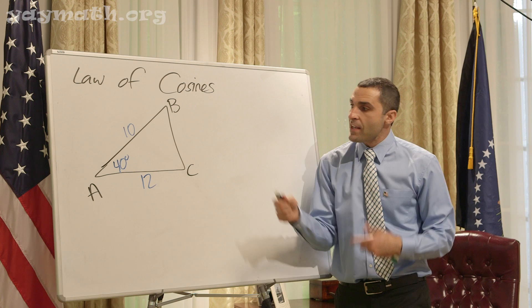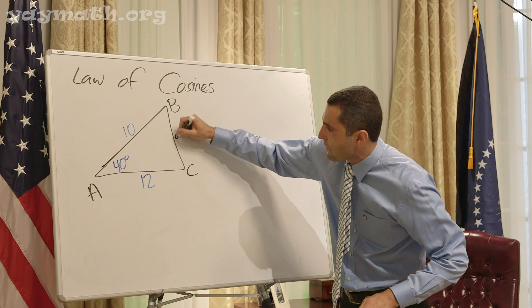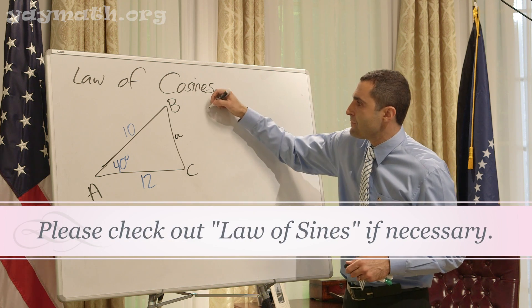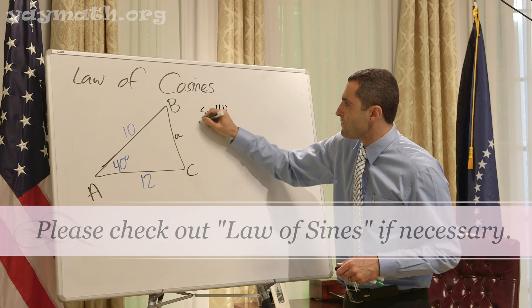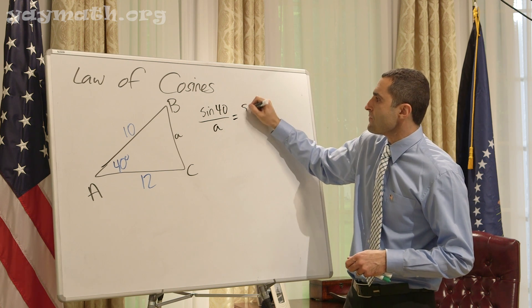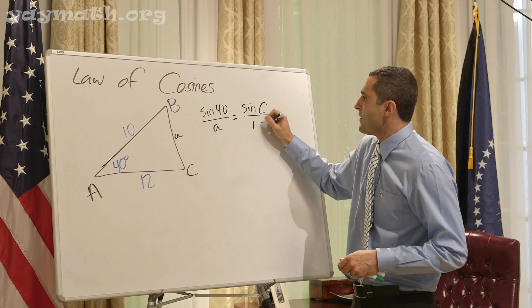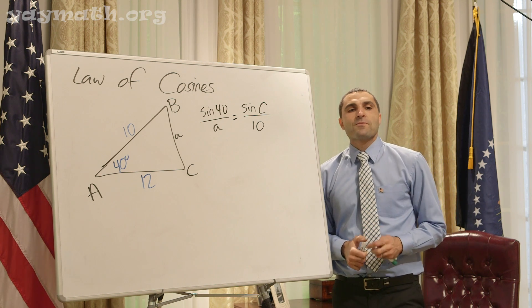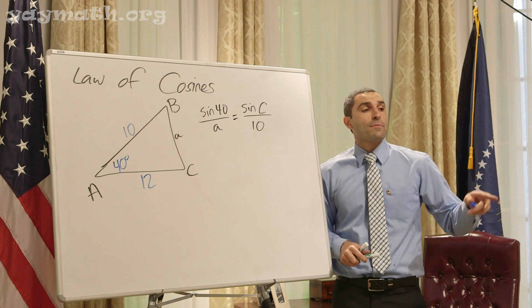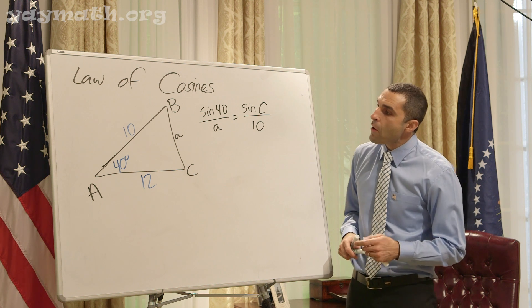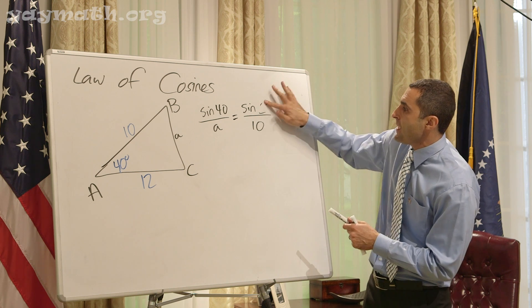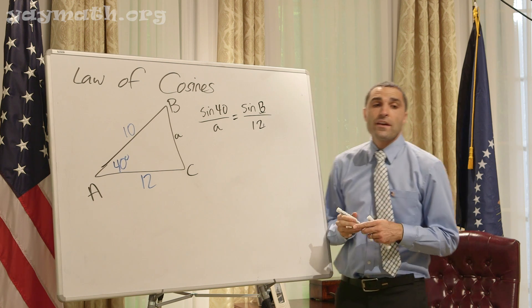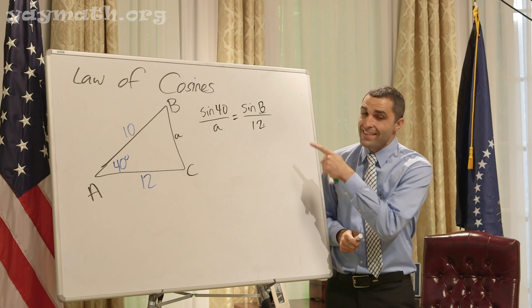Let's solve this triangle. We could use the Law of Sines to solve any triangle. This is side a. What would be the setup? Sine of 40 over a equals sine c over 10. What's the problem? Two variables. We have two variables, so no matter how hard we try, we can't use the Law of Sines in this case.